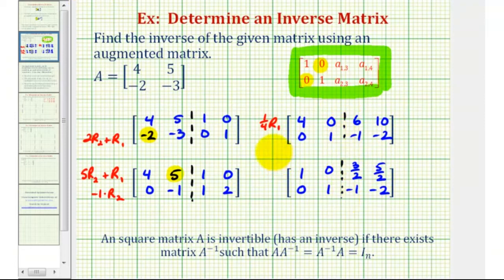Now notice on the left side of the augmented matrix, or this side here, we have the identity matrix, which means the right side is A inverse, or the inverse of the original matrix.